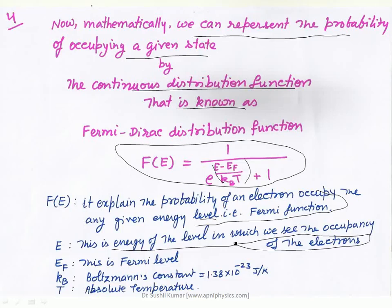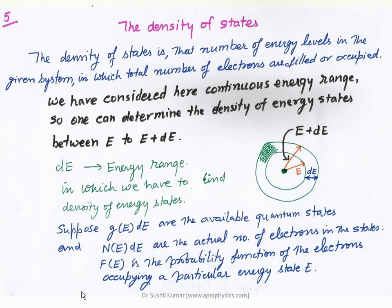kB is the Boltzmann constant, with value 1.38 × 10⁻²³ J/K, and T is the absolute temperature. On that basis one can explain the Fermi-Dirac distribution function. The ultimate point is related to the density of states.